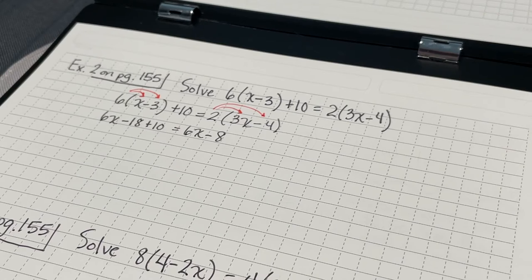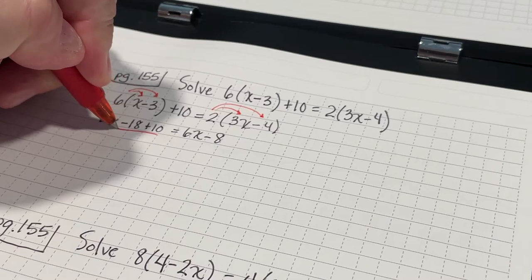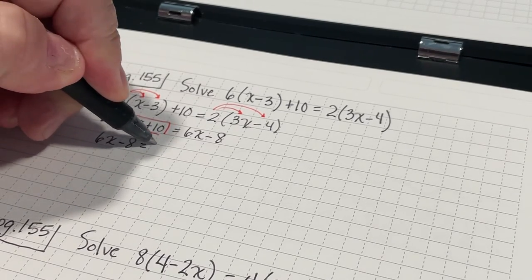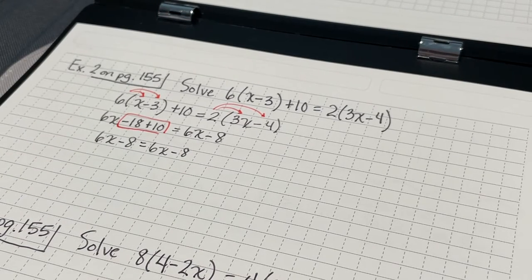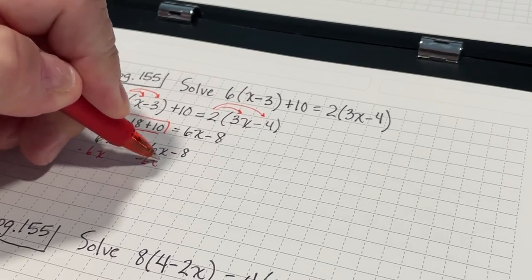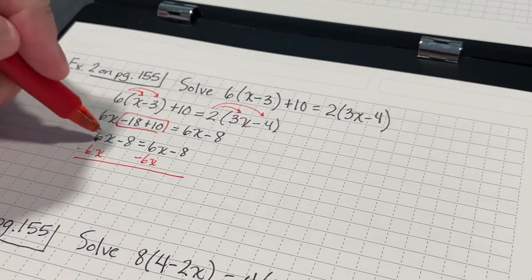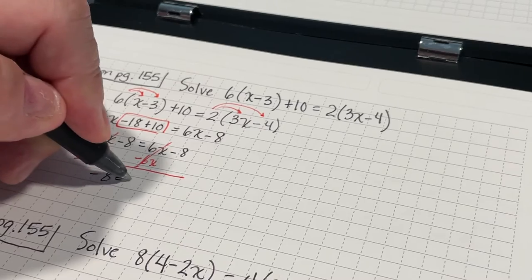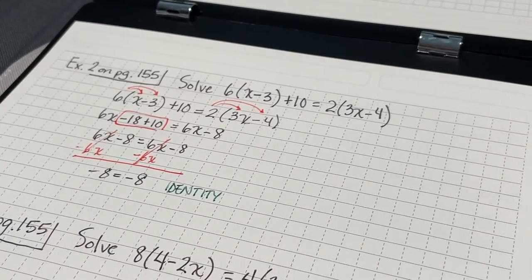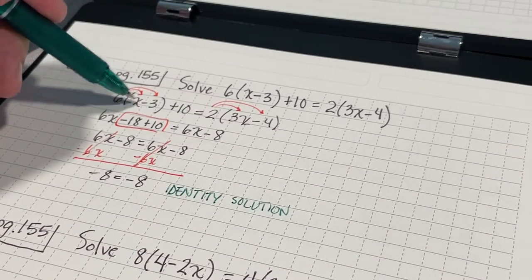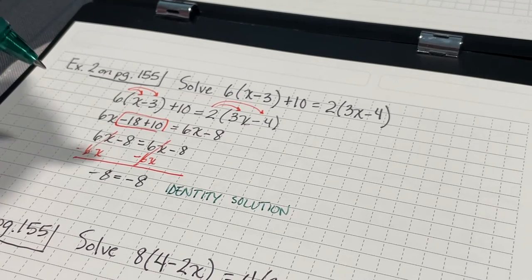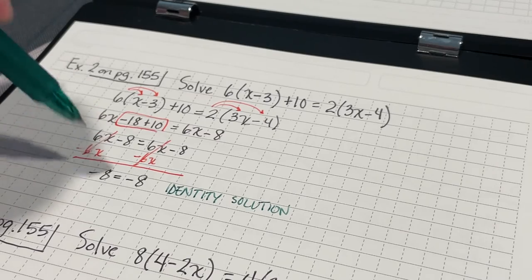Now, I'm going to do some combining of like terms. That gives me 6X minus 8 equals 6X minus 8. If I subtract 6X from both sides, that's going to give me negative 8 equals negative 8. This is an identity solution. The reason is, any number that I plug in for X will make this a true statement. I can make X 0, I can make X 10. Every solution of X will make this a true equation.